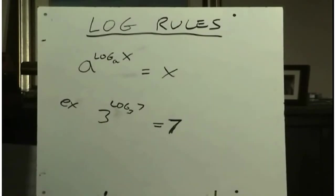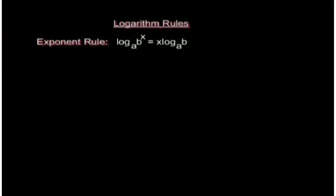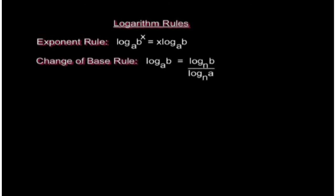So let's review all of those log rules one more time. There's the exponent rule that says log base A of B to the power of x is equal to x times log base A of B. The change of base rule that says log base A of B is equal to log base N of B divided by log base N of A. So N can be any base you want as long as it's greater than 0 and not 1.